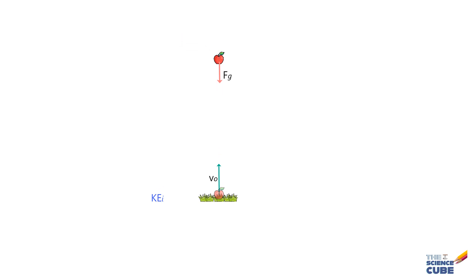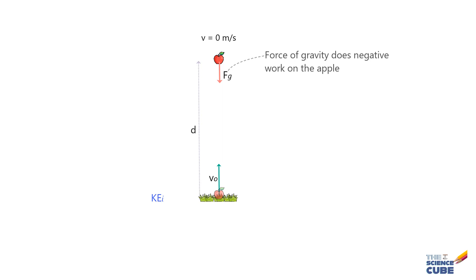In physics, we say that this force of gravity is doing negative work on the apple. The apple has now reached the top and the velocity has become 0. Let us say the displacement is d. Basically, the force of gravity has done enough negative work on the apple to reduce the velocity to 0, and therefore its kinetic energy has also become 0. So how do we find the magnitude of work done on the apple and also conclude that it is negative?